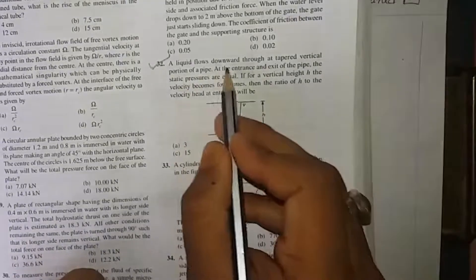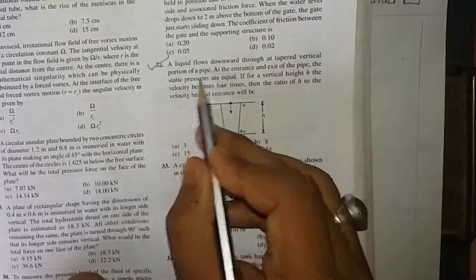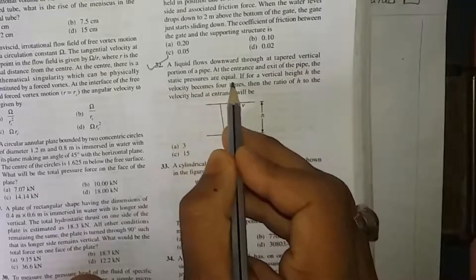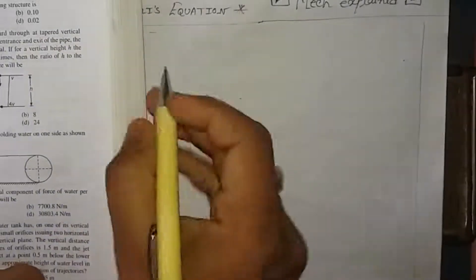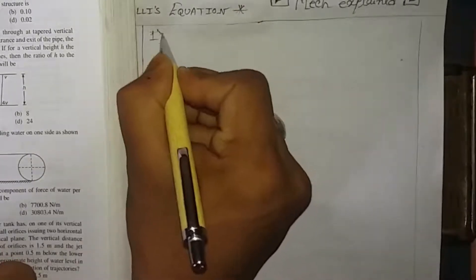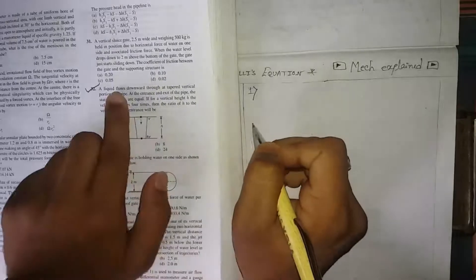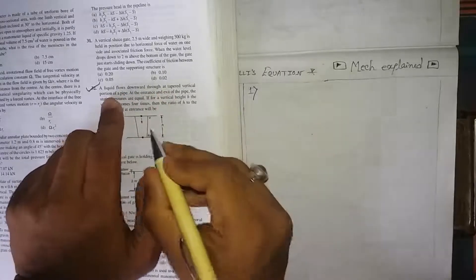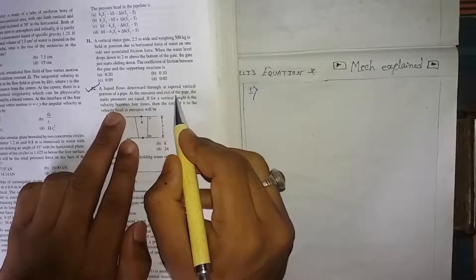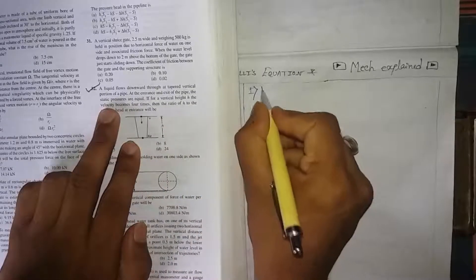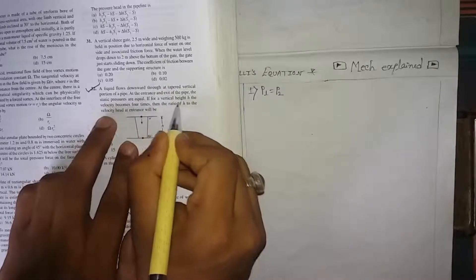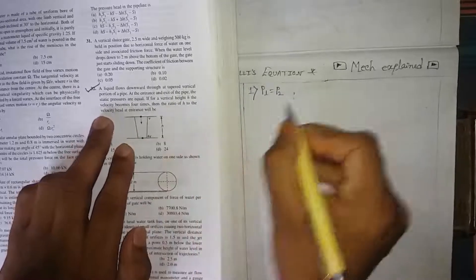First question: a liquid flows downward through a tapered vertical portion of a pipe. At the entrance and exit of the pipe, the static pressures are equal — that means pressure at P1 and P2 are equal. For a vertical height h, meaning z1 minus z2 equals h.